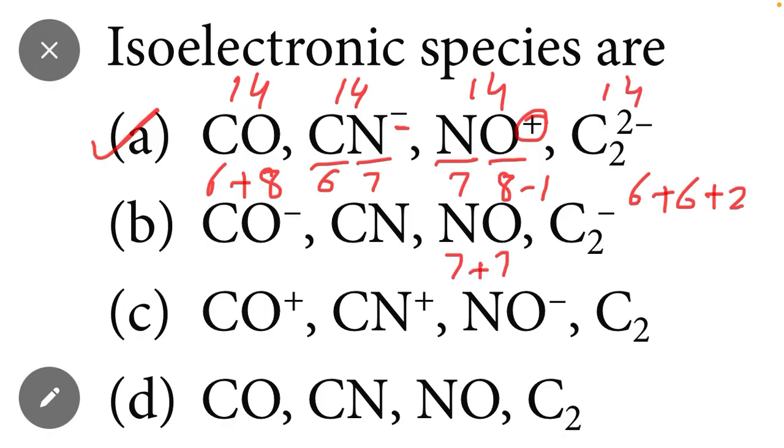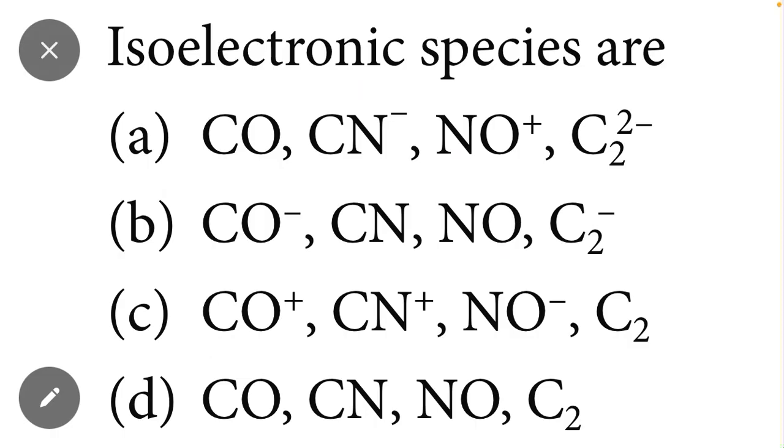As you can see, all the species have 14 electrons. That is why all these species are called isoelectronic species. I hope that all the students understand how to identify isoelectronic species. If you also understand, please subscribe my YouTube channel, like this video, and share this video. Allah hafez.